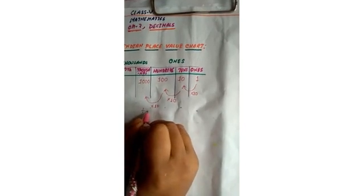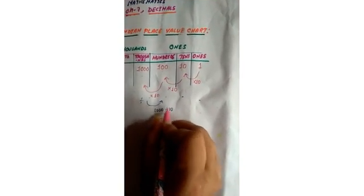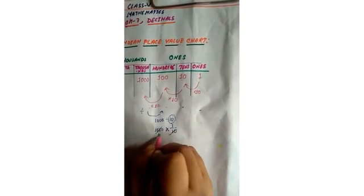Now if we reverse the process — that means division — one thousand divided by ten gives one hundred. One hundred divided by ten gives ten. Ten divided by ten gives one. So we are getting the pattern: dividing by ten moves one place to the right.